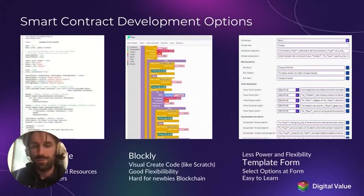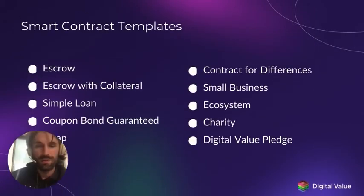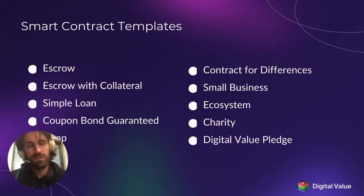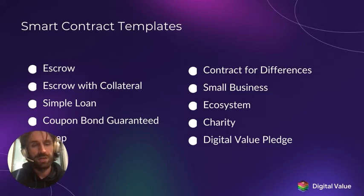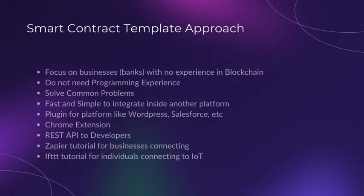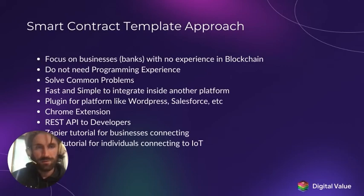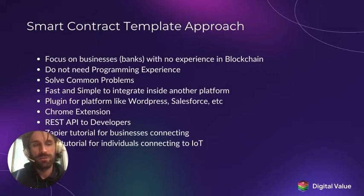Digital Value aims to help everyone at the point of their need based on certain parameters that most people have. For example, an escrow — most people in their lifetime have the need for an escrow. So we can identify the most used smart contracts, delve into the needs of the masses, and build those templates for all. The template approach is focused on businesses, particularly in finance, with no experience in blockchain — small, medium size — helping everyone, especially those without programming or Haskell experience.